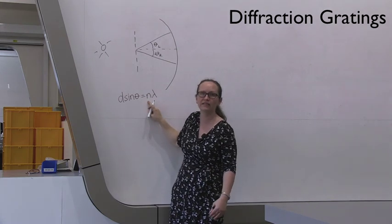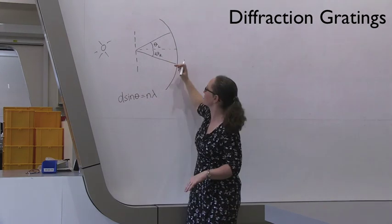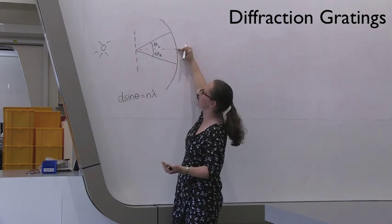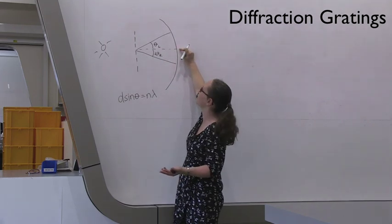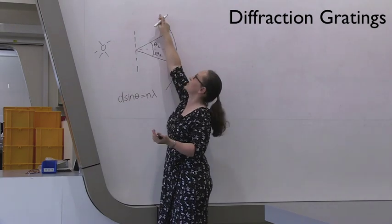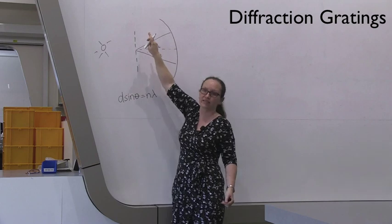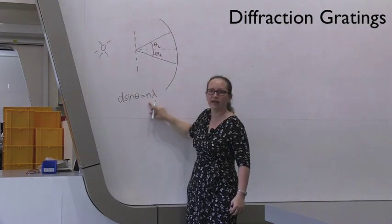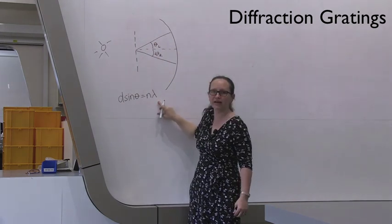N is the order of the lines. So what you'll find is that for the sodium spectrum, you'll see a very bright central line, which is the zeroth order one, and then you'll see a first order one. And then if you keep on going around in a circle, you'll see the second order one. So n is the order, and lambda is the wavelength.